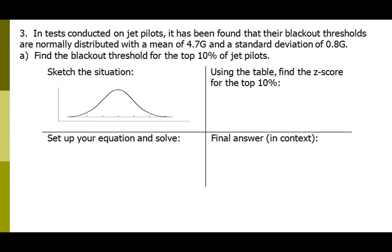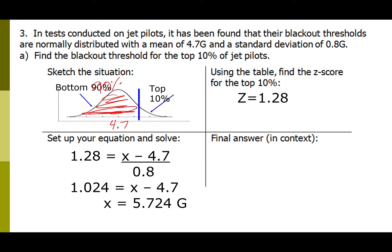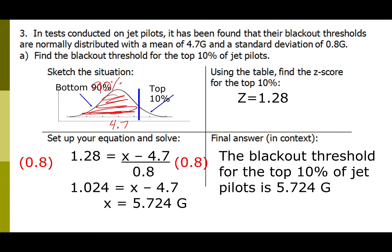Jet pilots' blackout thresholds are normally distributed with a mean of 4.7 G's. Find the top 10 percent of jet pilots. Since the table gives area to the left, look up the bottom 90%, or 0.90, which gives z equals 1.28. Set up: 1.28 equals (value minus 4.7) divided by the standard deviation, and solving gives 5.724 G's. In context: the blackout threshold for the top 10 percent of jet pilots is 5.724 G's.